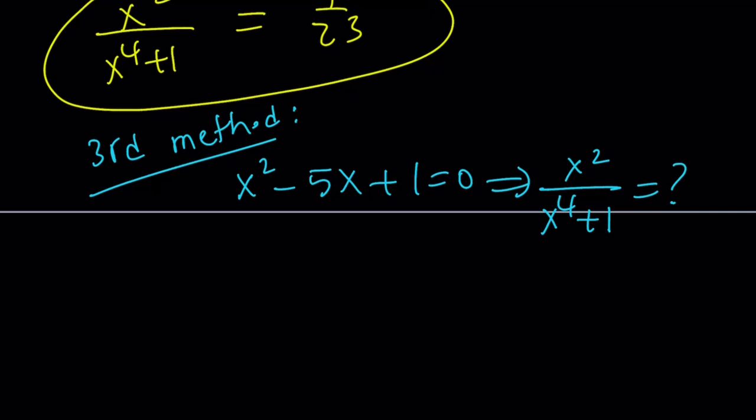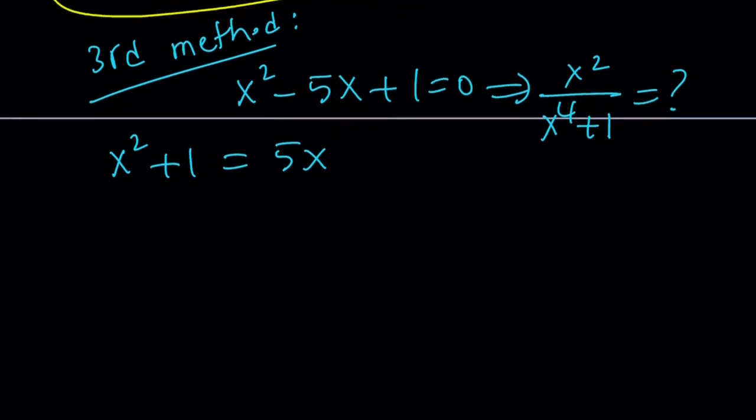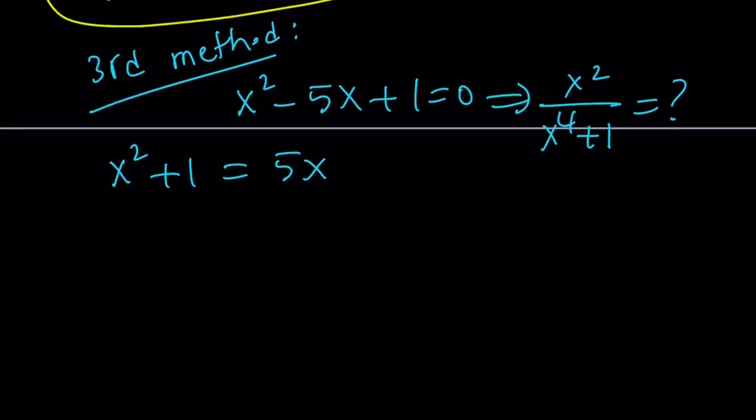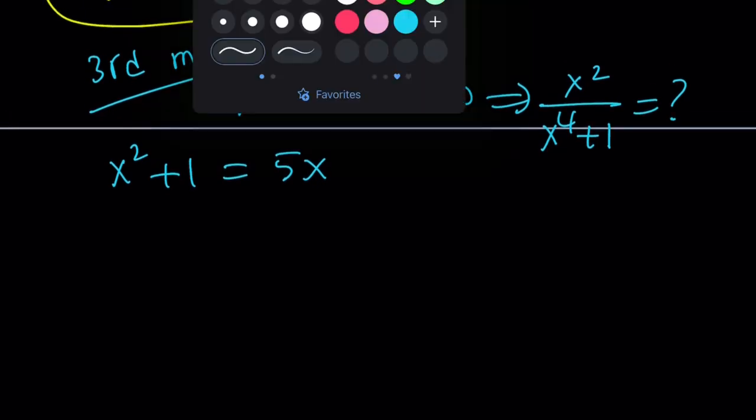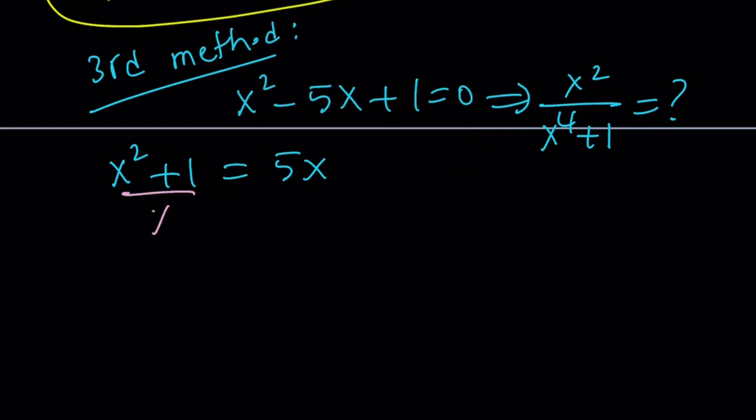Since I have this expression, I can go ahead and isolate 5x or add 5x to both sides. And then here's the thing. Notice that if I divide both sides by x, I'm going to get something super nice. First of all, I'm going to get a numerical answer on the right hand side. And on the left hand side, I'm going to get something nice, which is x plus 1 over x.